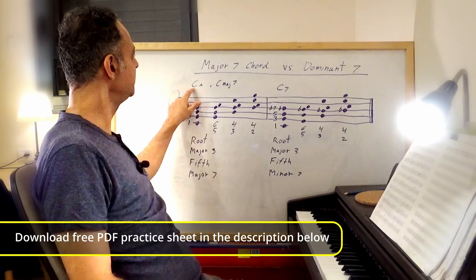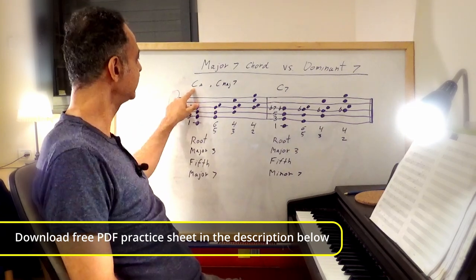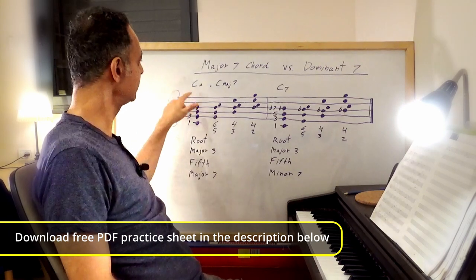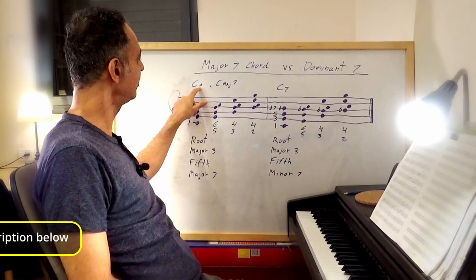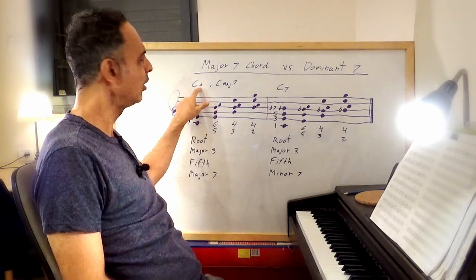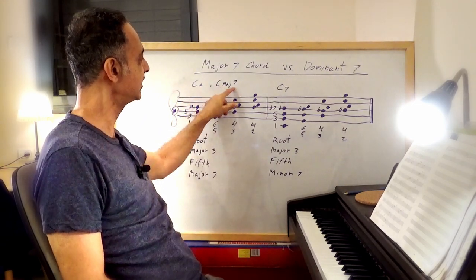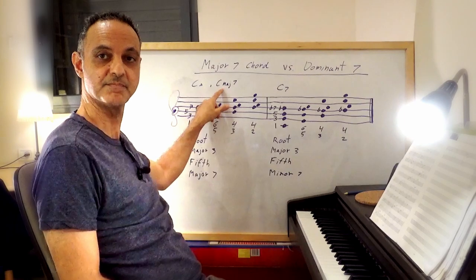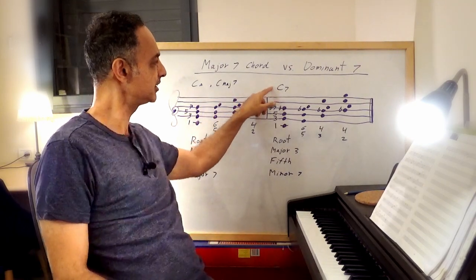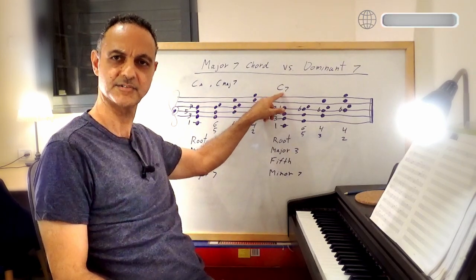The major 7 can be found in literature in different ways. You can find it as C with a small triangle, meaning C major 7. Or you can find it as C, M, A, J, 7 — C major 7. While the dominant 7, you will see just the letter C and the number 7: C7.